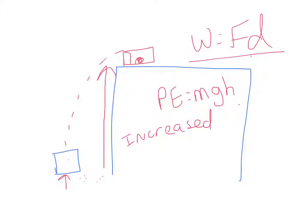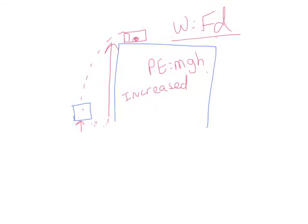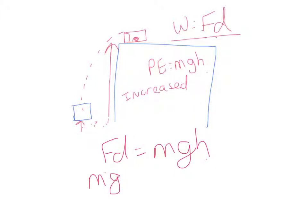You can simplify this: force times distance equals mass times gravity times height. That makes sense — the distance it moved was the height it moved, and the force needed to lift it equals mass times gravity. So those two are equivalent equations.